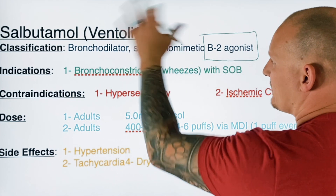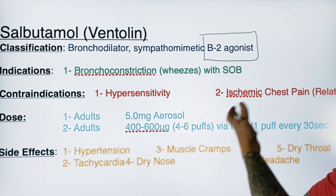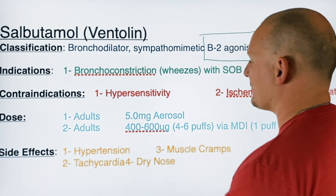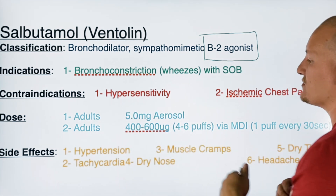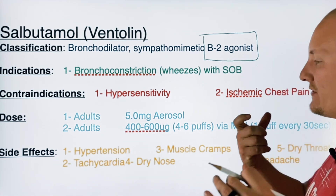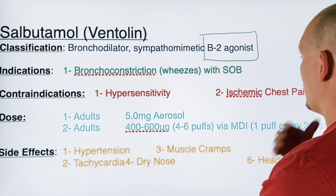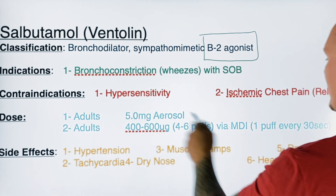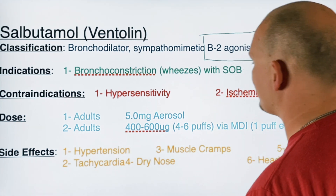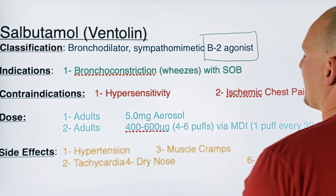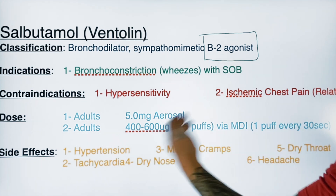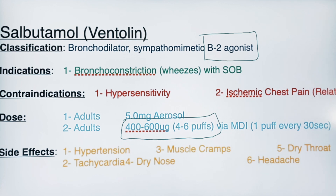For dosing, we have two types: nebulized and MDI. The nebulized dose is 5 milligrams in aerosol, delivered via mask or T-bar. The metered-dose inhaler delivers 400 to 600 micrograms per dose — each puff is roughly 100 micrograms, so that's 4 to 6 puffs. Administer one puff every 30 seconds so you're not making the patient short of breath. Many patients will already have their own MDI with them.